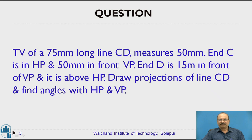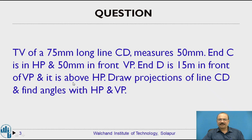In the given problem, the true length of line CD is 75 mm and its top view measures 50 mm — meaning the actual length is 75 mm but it appears as 50 mm. C is in HP, meaning we place point C on the XY reference line, and 50 mm in front of VP means 50 mm measured from the XY line. D is 15 mm in front of VP and above HP.